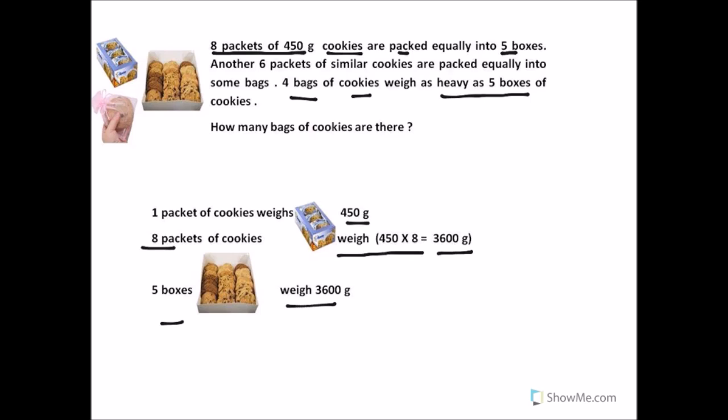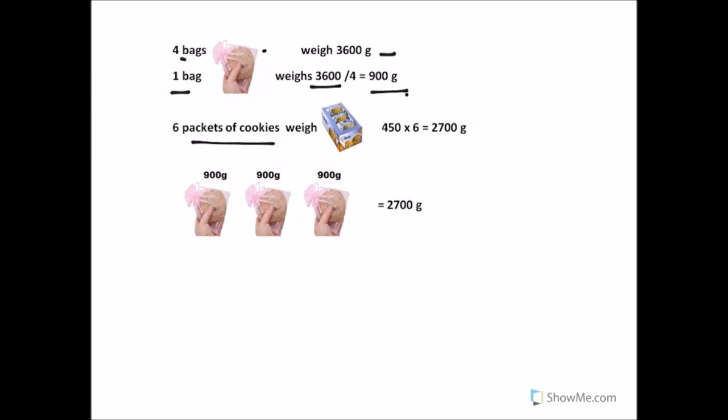Now, going to the question again. Another 6 packets of similar cookies are packed equally into some bags. We remember one packet of cookie weighs 450 grams. So 6 packets of similar cookies will weigh 450 into 6, that is 2700 grams.